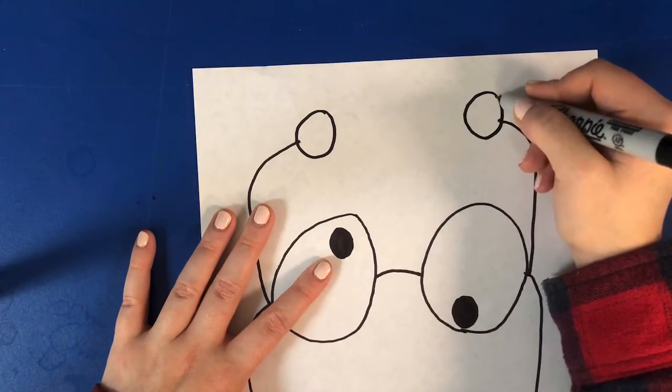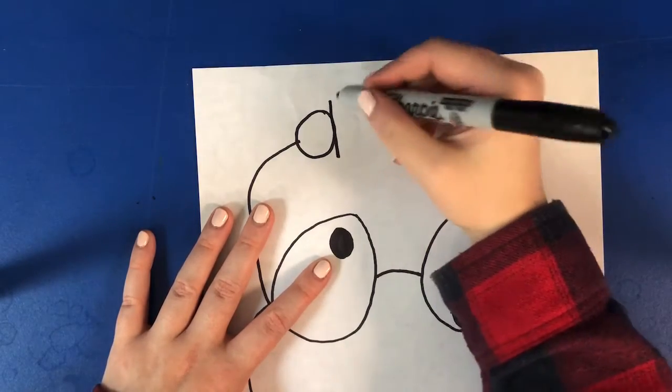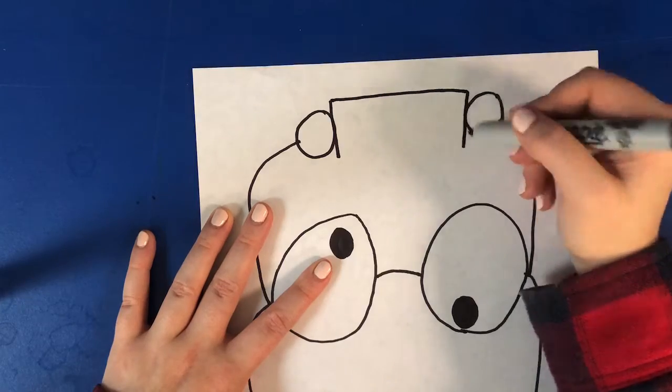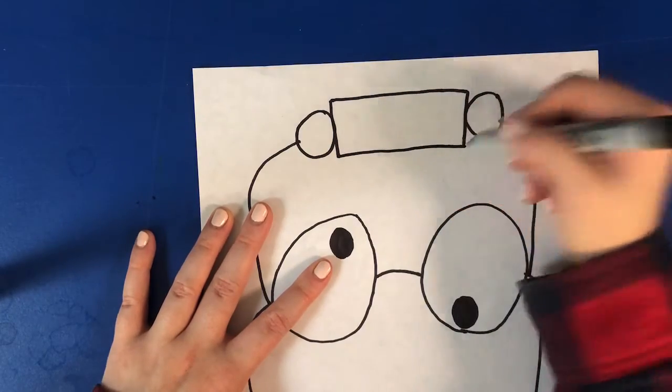And one circle light on the other side. Draw yourself a big, nice big rectangle in the middle. This is where we're going to write the word school.